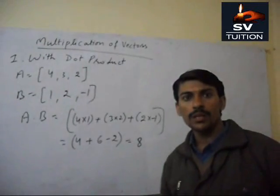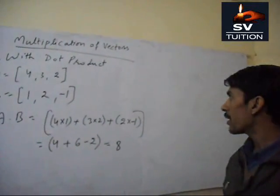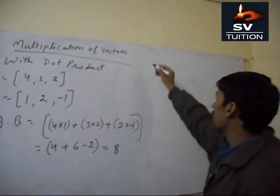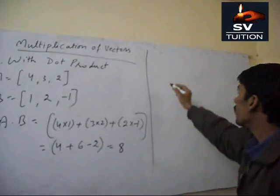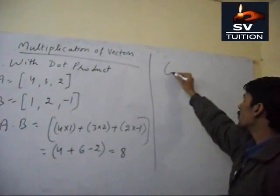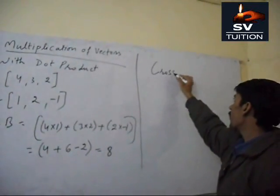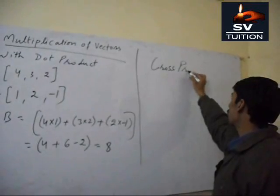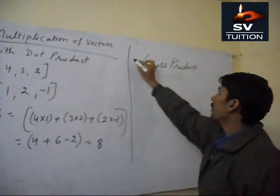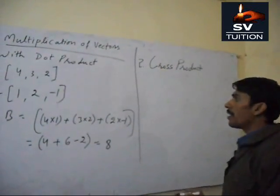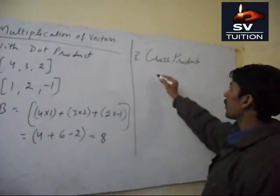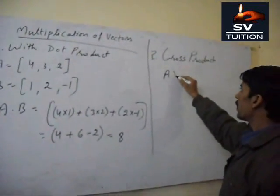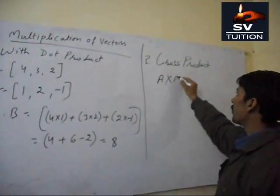Now we will explain the second method. This is cross product method. As per this, we can multiply A vector with B vector.